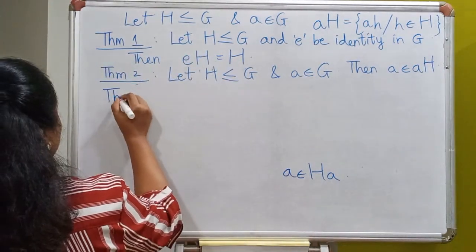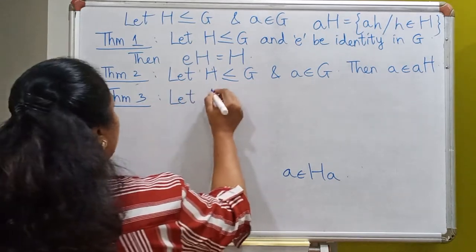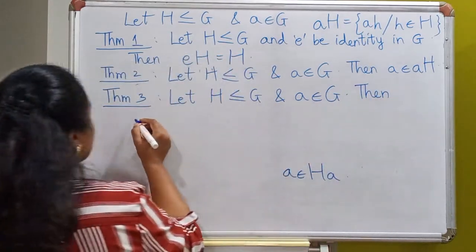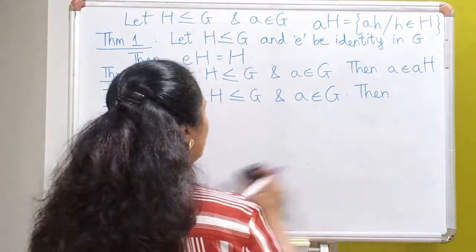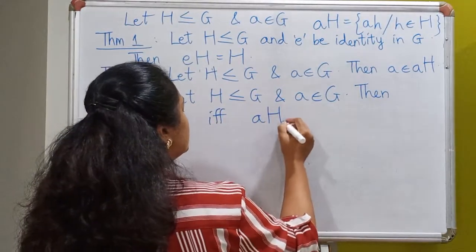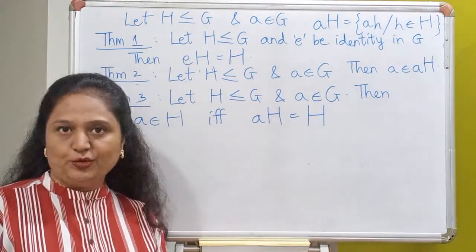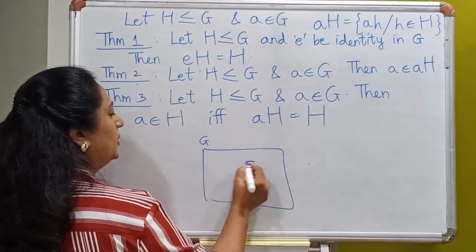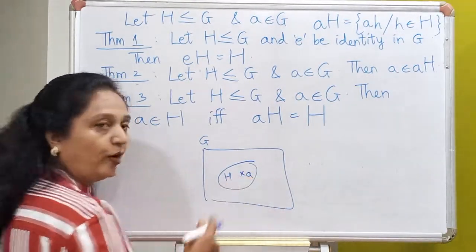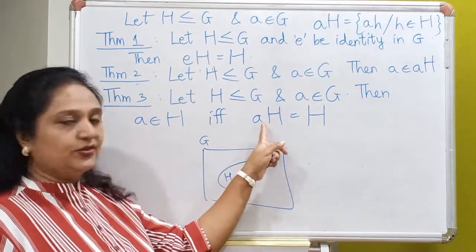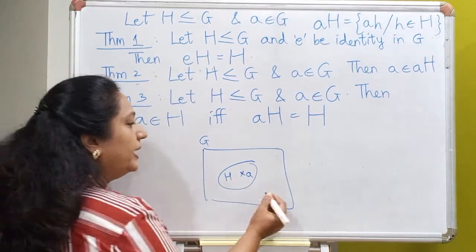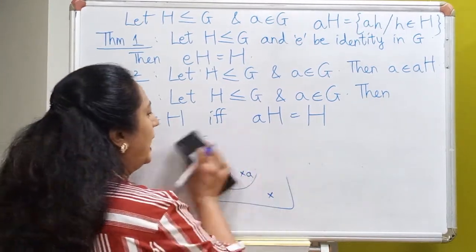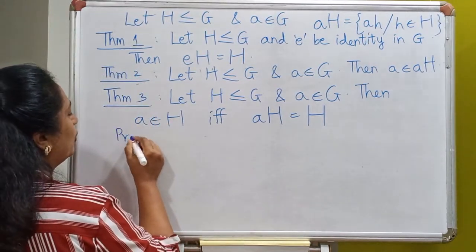We will now prove the next theorem. Let H be a subgroup of a group G and A be an element of G. Then A will be an element of the subgroup if and only if the left coset AH is the same as the subgroup H. So we will prove that if A lies inside the subgroup and we look at the left coset AH, we get back H; and if we pick an element from outside H, then the left coset will not equal H. This is an if-and-only-if result, so we break up the proof into two parts.